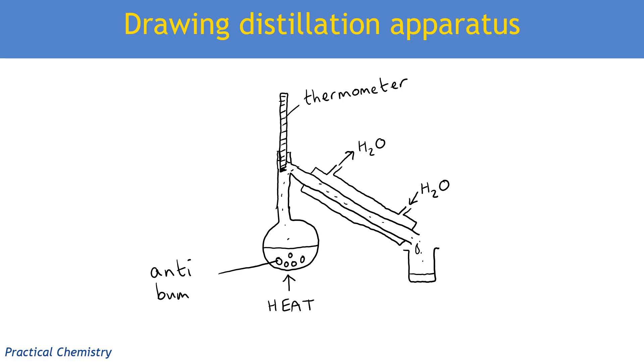A little clue which tells us we need to draw and label because it's not overly clear our anti-bumping granules. Remember, those are the things that allow that extra surface to form. Those are the things that allow the bubbles to form and be smaller so that the boiling is smoother. So there is our distillation apparatus. Keep it simple and you should be getting full marks for that question.